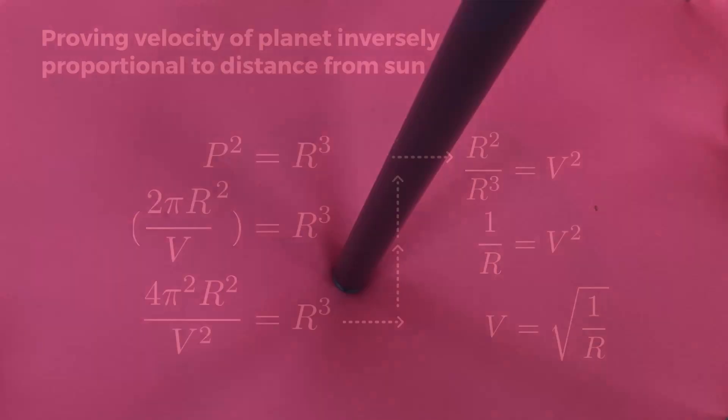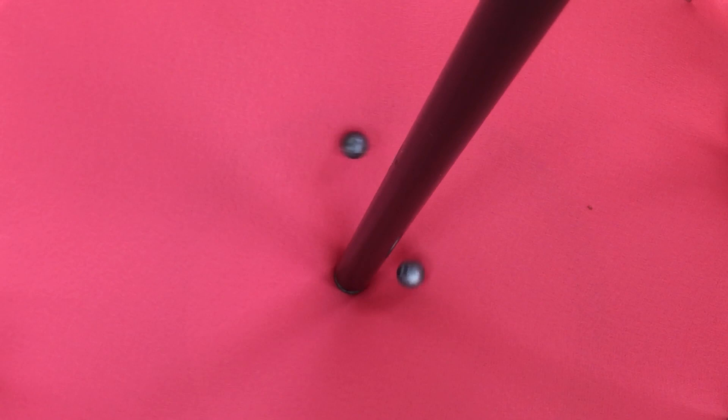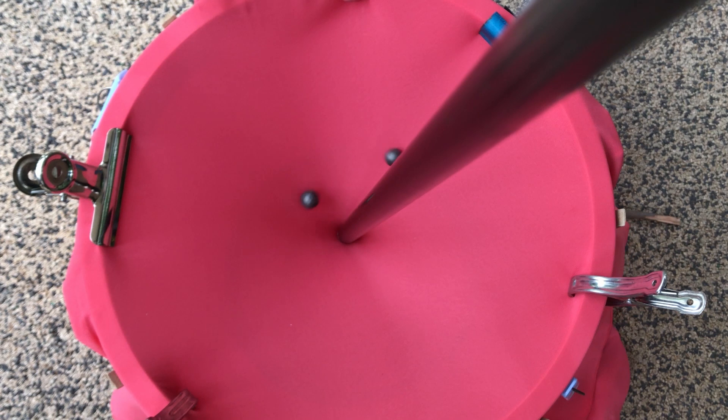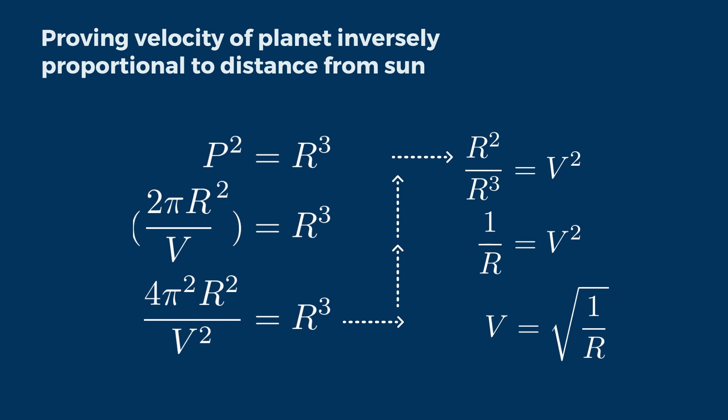Two metal balls will be seen orbiting around the Sun, representing two different planets. While the two metal balls are orbiting, we can see that the metal ball nearer to the Sun moves at a higher velocity than the one further away. This shows and proves that the velocity of the metal ball orbiting around the Sun is inversely proportional to the mean distance from the Sun, which is the equation V = √(1/R).